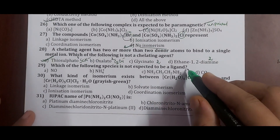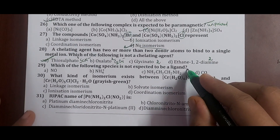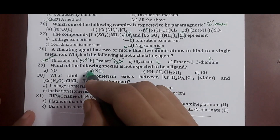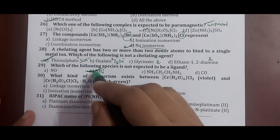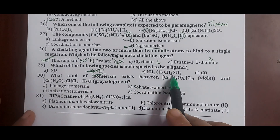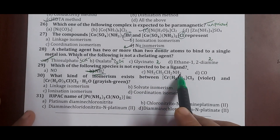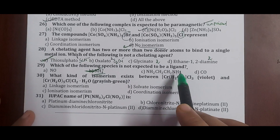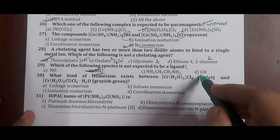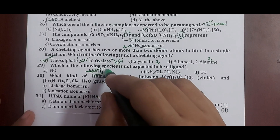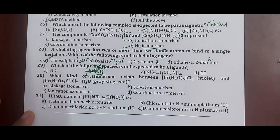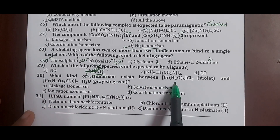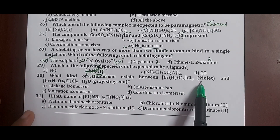Question 29: which species is not expected to be a ligand? A ligand must be able to donate an electron pair. NO can donate an electron pair. NH4⁺ is a positive ion — cannot donate an electron pair, so cannot act as a ligand. Ethane-1,2-diamine has lone pairs on nitrogen — can act as a ligand. CO can also act as a ligand. Correct answer: option B, NH4⁺.